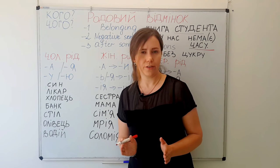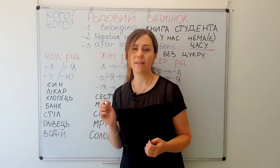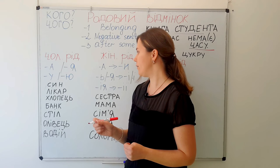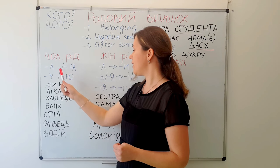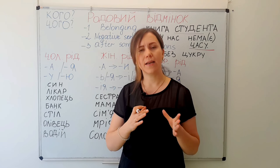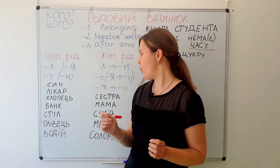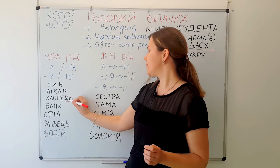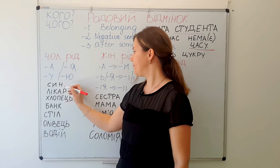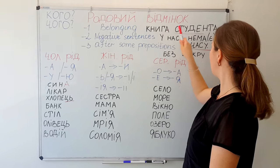There are so many rules for the masculine gender genitive case that I will make a separate video — maybe even several. Today we're just looking at examples to give you a general idea. So for masculine gender, чоловічий рід, we can have А or Я, or У or Ю. If a noun ends in a hard consonant, we get А or У; if soft or with the soft sign, we get Я or Ю. Example: Син — the genitive case form is сина.